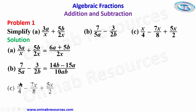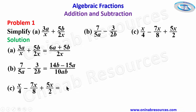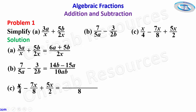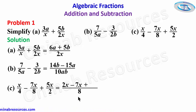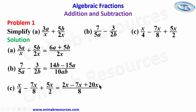For part (c) we have x over 4 minus 7x over 8 plus 5x over 2. We find the LCM of 4, 8, and 2, which gives us 8. 8 divided by 4 gives 2; 2 times x gives 2x. 8 divided by 8 gives 1; 1 times 7x gives 7x, so that's minus 7x. 8 divided by 2 gives 4; 4 times 5x gives 20x. Simplifying the numerator: 2x plus 20x gives 22x, minus 7x gives 15x over 8.